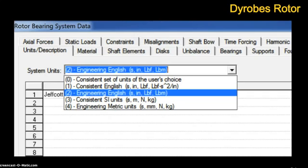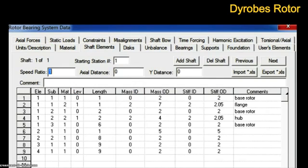In Dyrobes rotor, it's simple to build a model. You start by selecting one of four units of measurement in either English or metric units, or you can specify your own system of units. You select your materials and then build your model by defining separate geometric elements by length, mass, and stiffness.